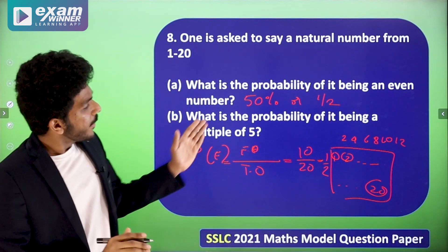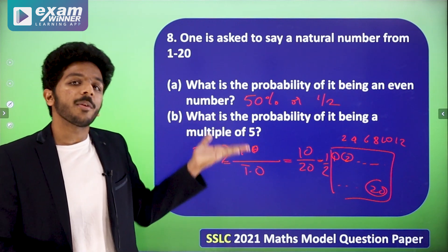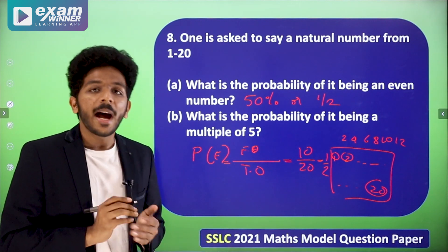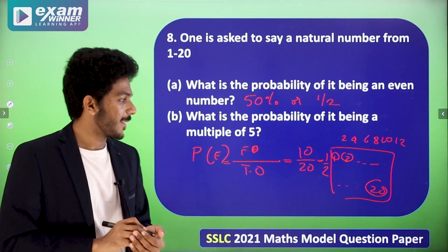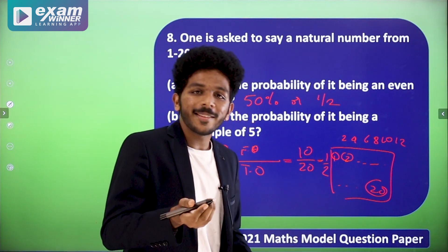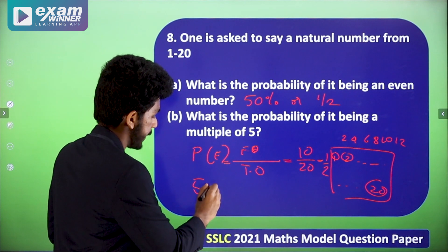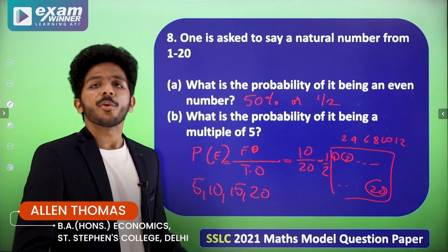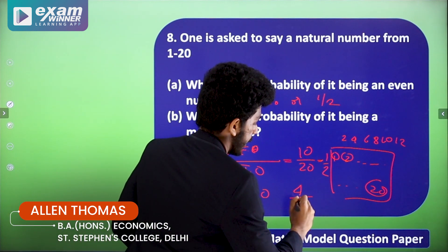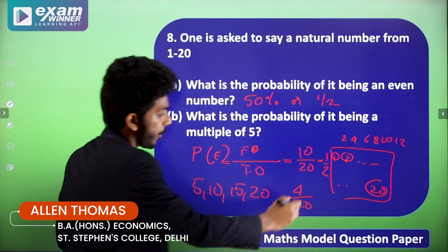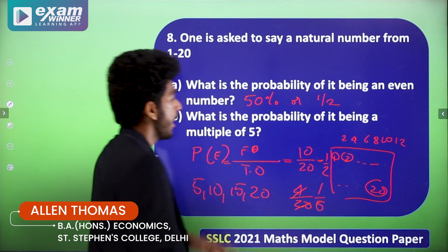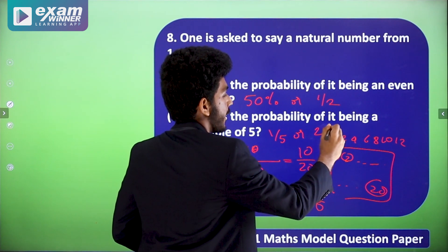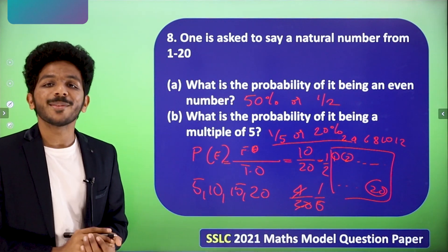The second part: what is the probability of it being a multiple of 5? From 1 to 20, the multiples of 5 are: 5, 10, 15, and 20 — that is 4 numbers. Total outcomes are 20. So the probability is 4/20 = 1/5, or 20%.